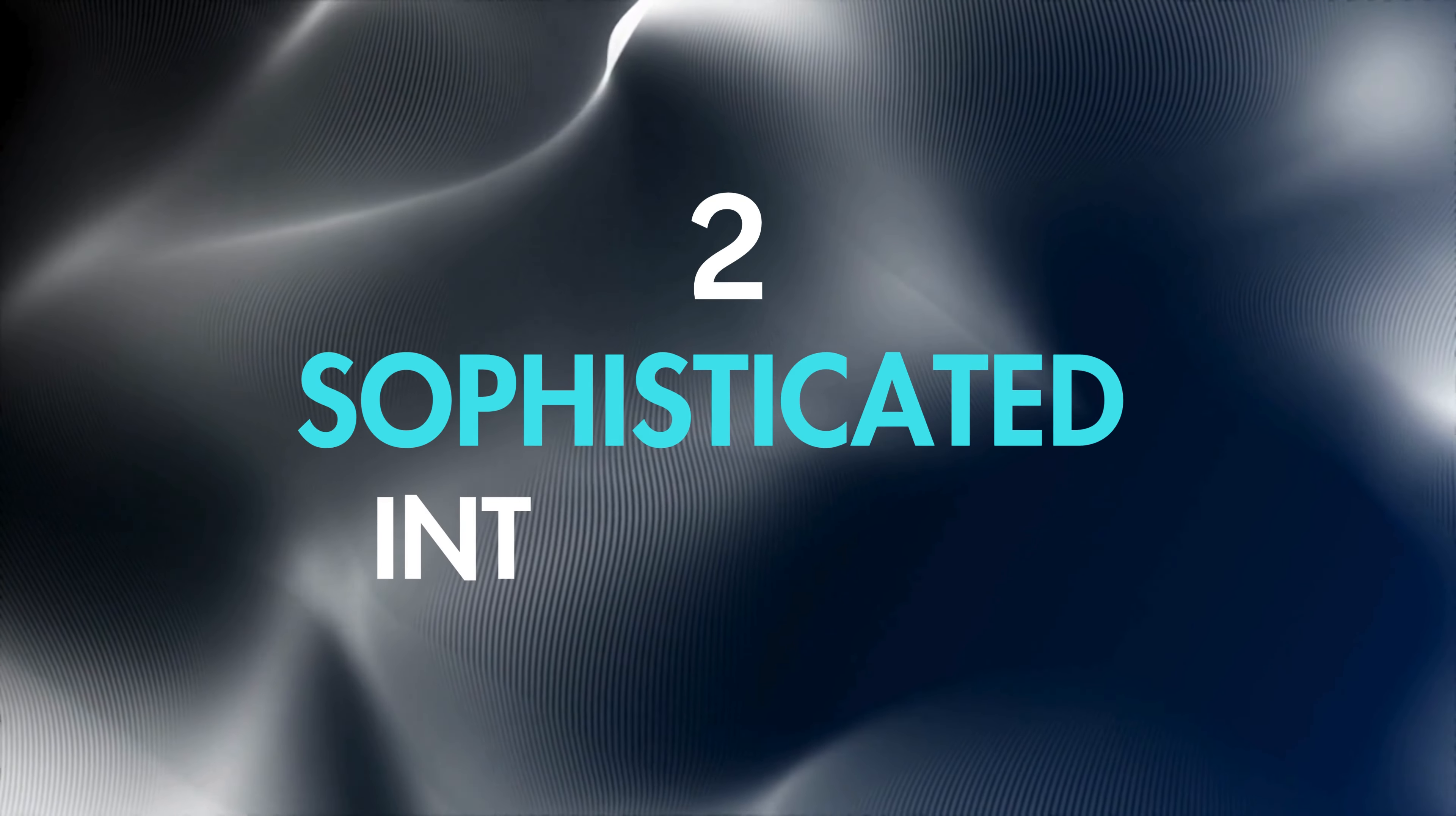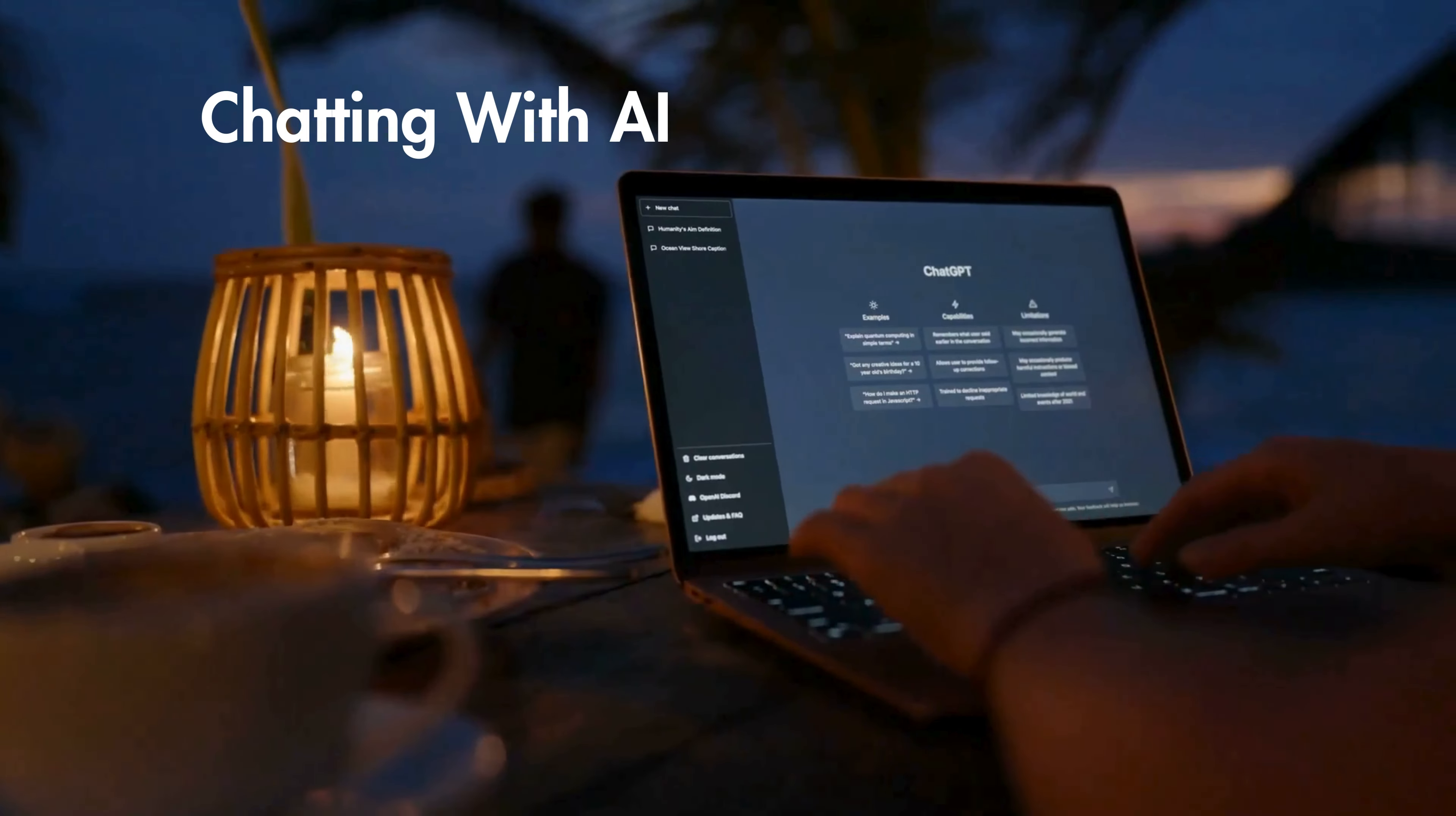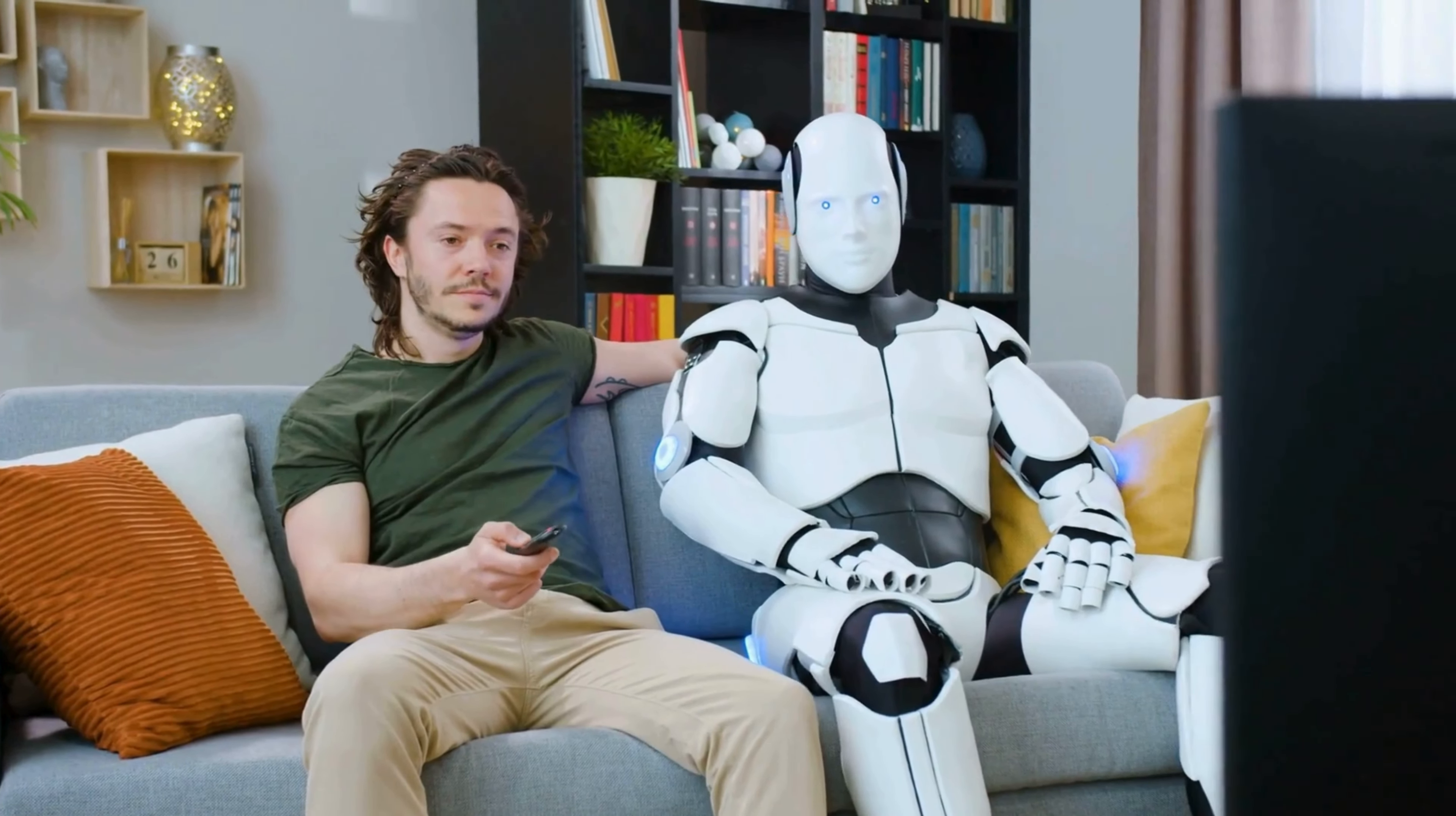Number 2: Sophisticated interactions. By 2040, AI companions will feel like real friends, adapting to our skills and preferences. Imagine chatting with an AI that understands you perfectly and recommends personalized experiences. Think of having an AI friend who knows your favorite movies and suggests the perfect one for your mood every time.